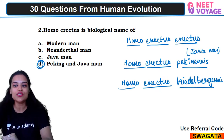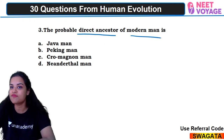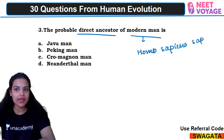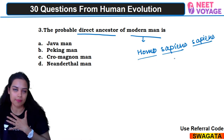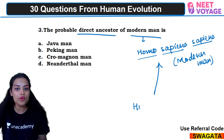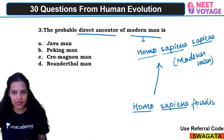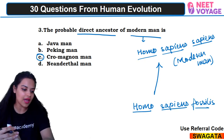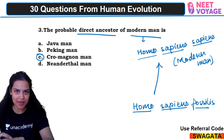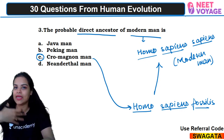Third question: the probable direct ancestor of modern man. Modern man is Homo sapiens sapiens — we are all Homo sapiens sapiens. They have evolved from Homo sapiens fossilis, which is nothing but the scientific name of Cro-Magnon man. So C would be the right answer. The third question's answer would be Cro-Magnon man, whose scientific name is Homo sapiens fossilis.